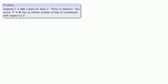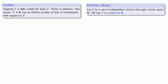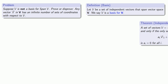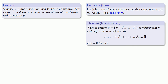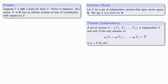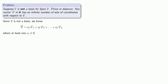We have our definition for basis, which depends on whether our set of vectors is independent, and our theorem on independence, which tells us when a set of vectors will be independent. Since our set of vectors is not a basis, we know that the linear combination equal to zero has at least one solution where at least one of our ci's is not equal to zero. So let's consider some vector in our vector space.